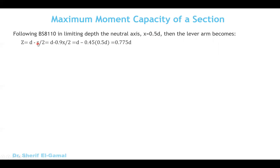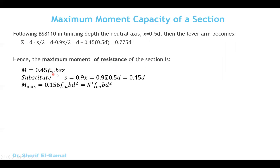Substituting s equal to 0.45d (which is 0.9x with x equal to 0.5d) and z equal to 0.775d into the moment equation, the maximum moment of resistance equals 0.45 Fccu times b times 0.45d times 0.775d, which gives M maximum equals 0.156 Fccu bd squared. We call this factor k dash, so k dash equals M maximum divided by Fccu bd squared, and it equals 0.156.